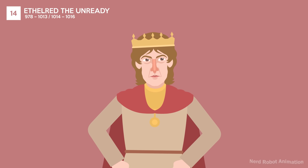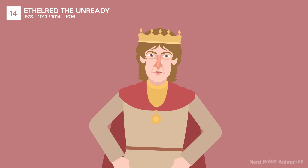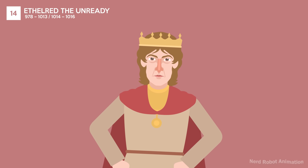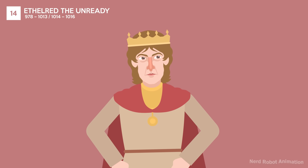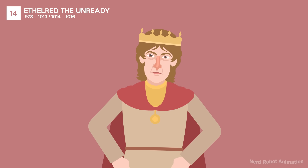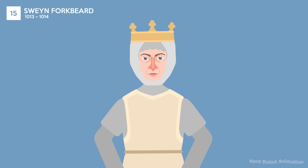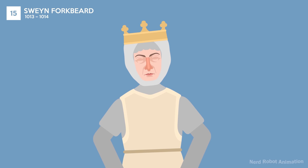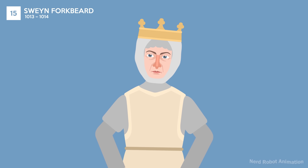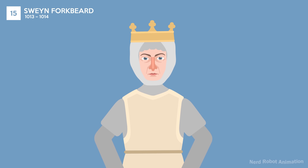Aethelred the Unready is known for his poor preparation against Viking invasions, earning him the epithet 'the Unready.' His reign was marked by extensive Danish attacks and the infamous St. Brice's Day massacre. Swain Forkbeard was a Danish king who briefly ruled England after Aethelred's initial ousting. His reign was short-lived due to his sudden death in 1014.